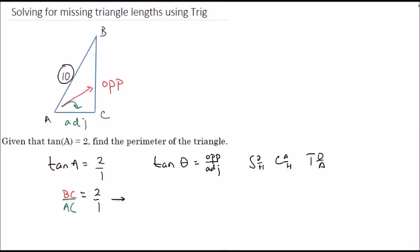What we can do is say that since the sides are in a ratio of 2 to 1, we can call one side 2x and the other side x, because 2x over x gives us 2 to 1.